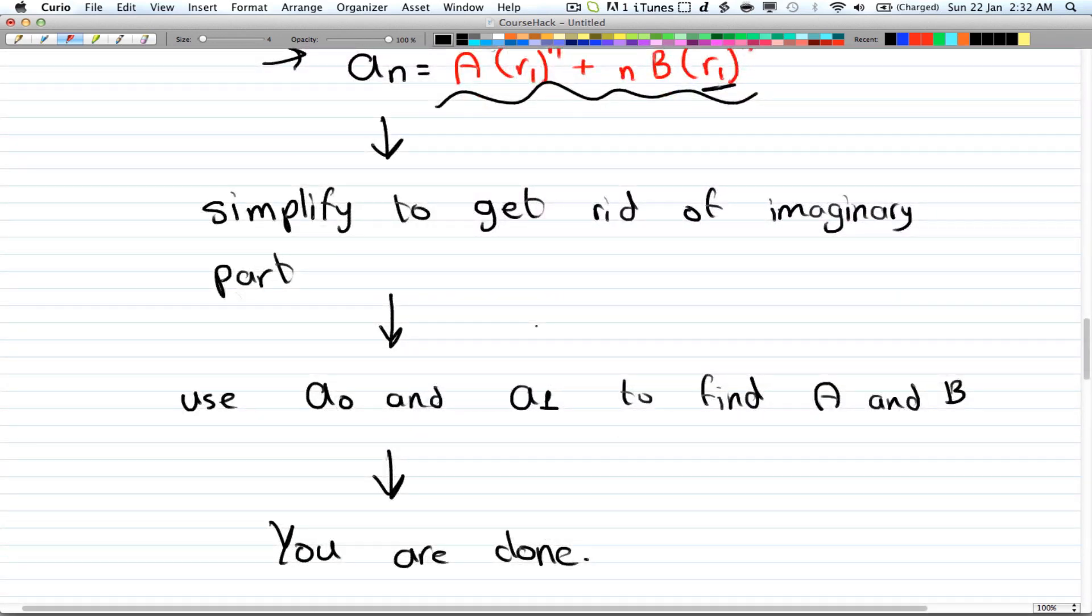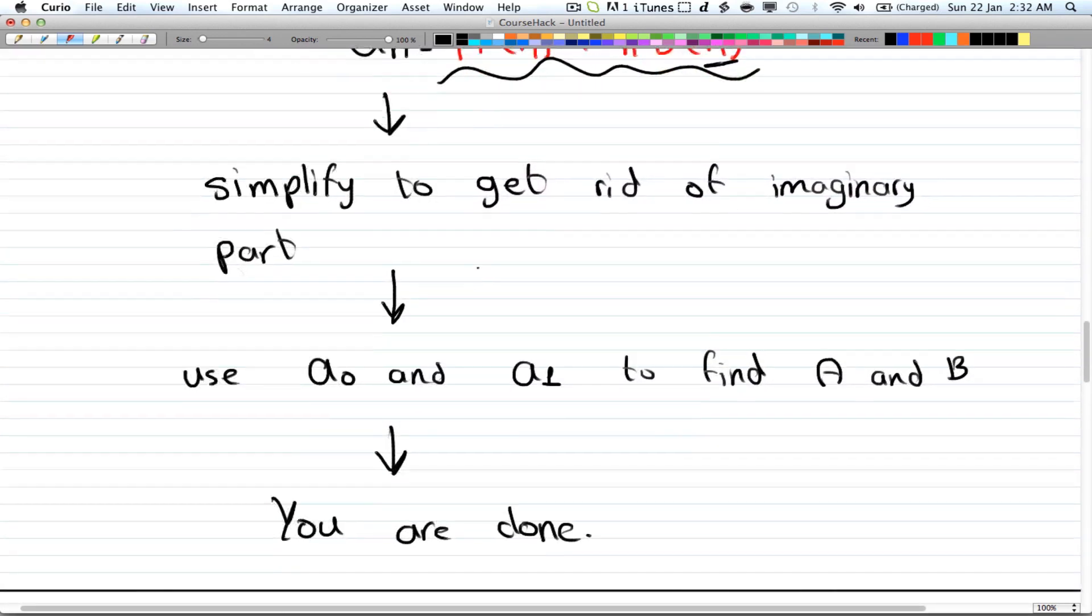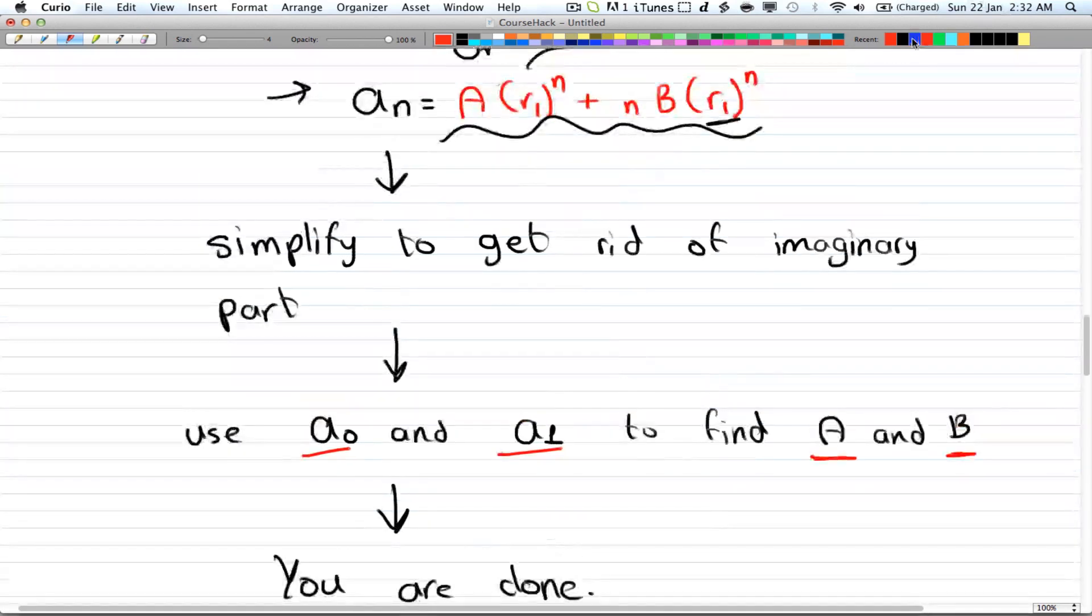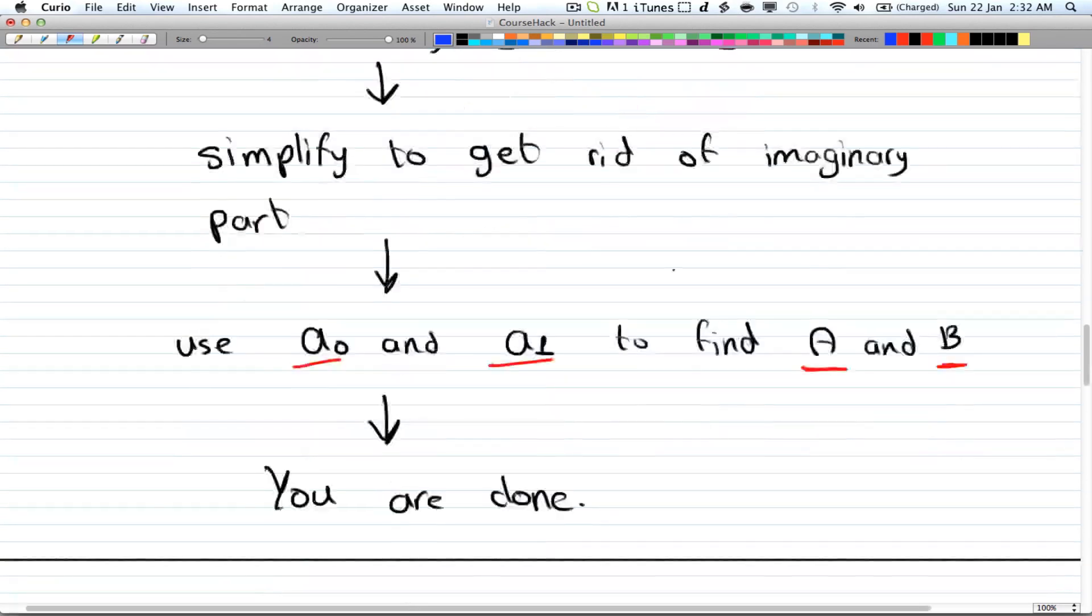Then you're going to use the conditions that you're given from the question for a₀ and a₁ to find A and B. So we're going to use a₀, a₁ to find A and B. And again, this is A and this is B. And that's it. We're done.